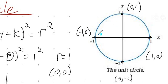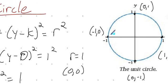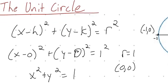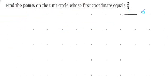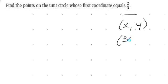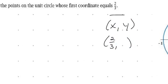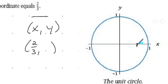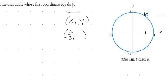Sometimes we're going to be asked to solve questions involving the unit circle. For instance: find the points on the unit circle whose first coordinate is two-thirds. We know the first coordinate is going to be an x value, so we're looking for x equal to two-thirds. We want to know the corresponding y values. We can see it's somewhere around there at two-thirds, and all we do is draw a line x equals two-thirds, and we're looking for those coordinate points.